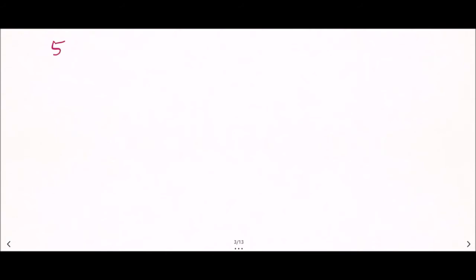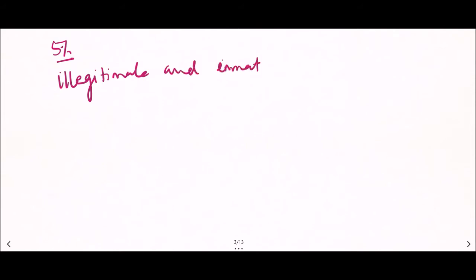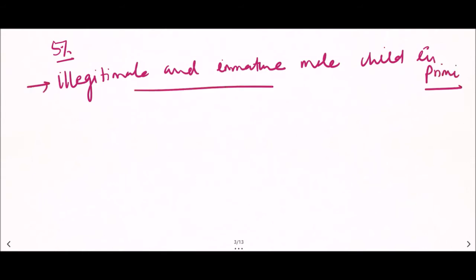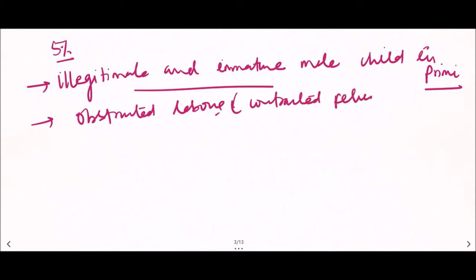The incidence of stillbirth is about five percent, and it occurs more frequently among illegitimate and immature male children in primiparae. It is commonly seen in obstructed labor due to contracted pelvis, which is most frequently associated with stillbirth.